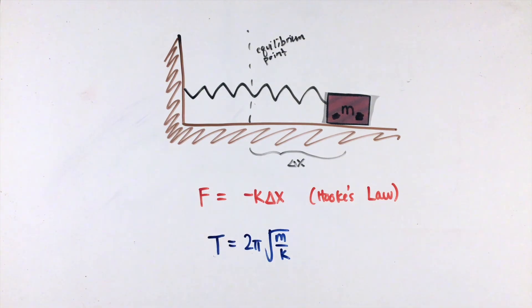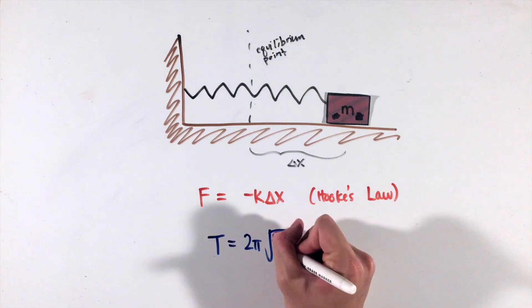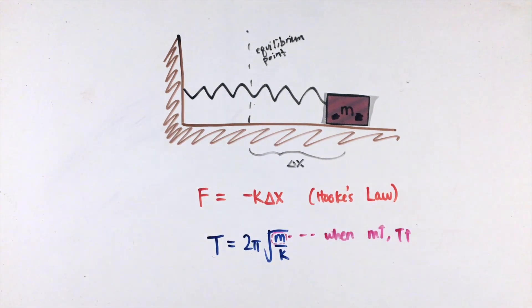The period equation for this oscillator is nearly identical to that of a simple pendulum, except the new variable that affects the period is mass instead of length. Besides that, however, all the other aspects of this equation remain the same, with a spring constant in the denominator replacing the gravity constant from before.